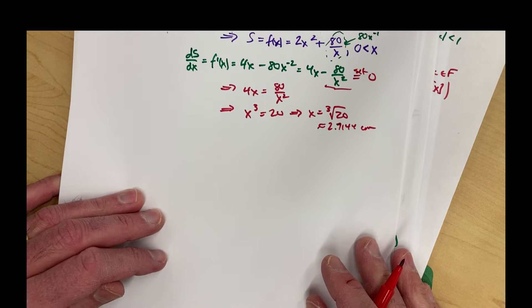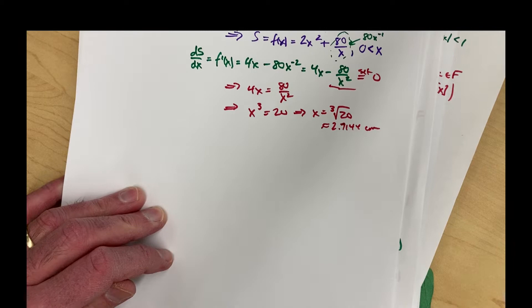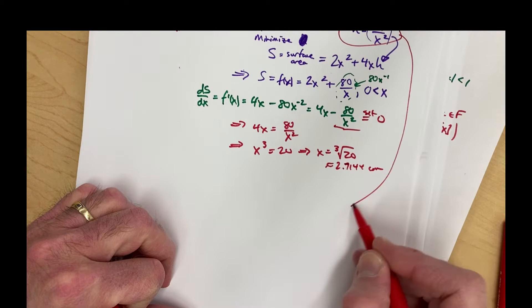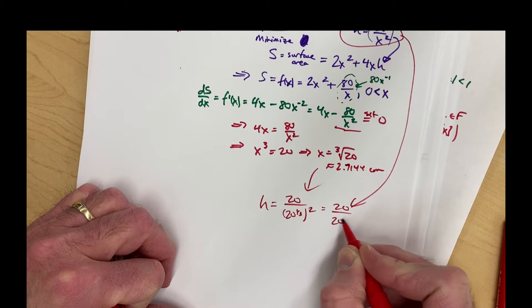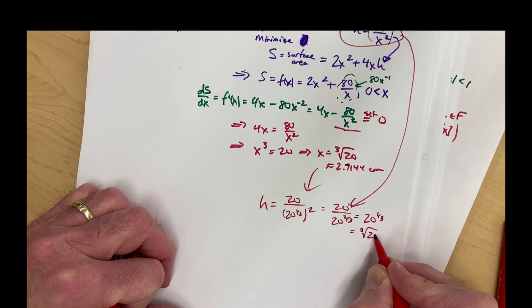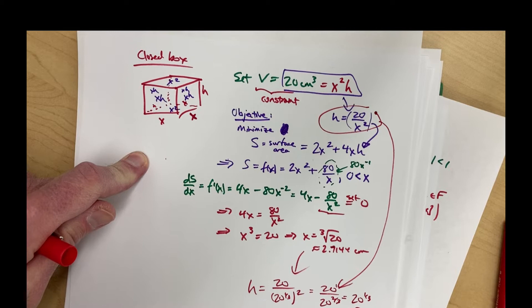Are we done? It says find the dimensions giving the minimum surface area, so we've found x but we still need h. Just use the volume constraint again: h equals 20 over x squared, which is 20 over 20 to the one-third squared, which is 20 over 20 to the two-thirds. Since 20 equals 20 to the first power, that simplifies to 20 to the one-third — the cube root of 20 again. So h equals x. It's going to be a cube where all sides have the same length, and that minimizes the surface area when it's a closed box.